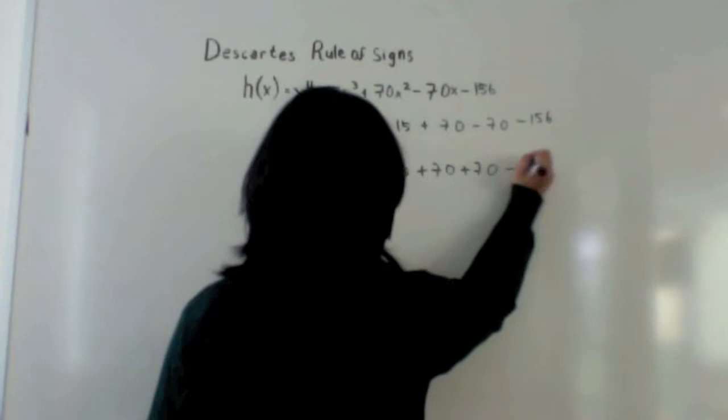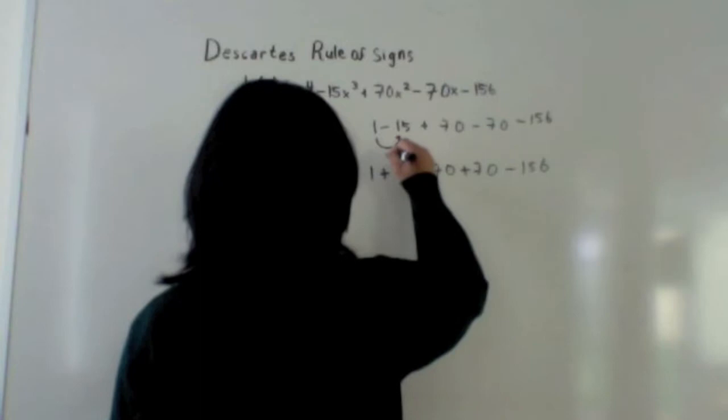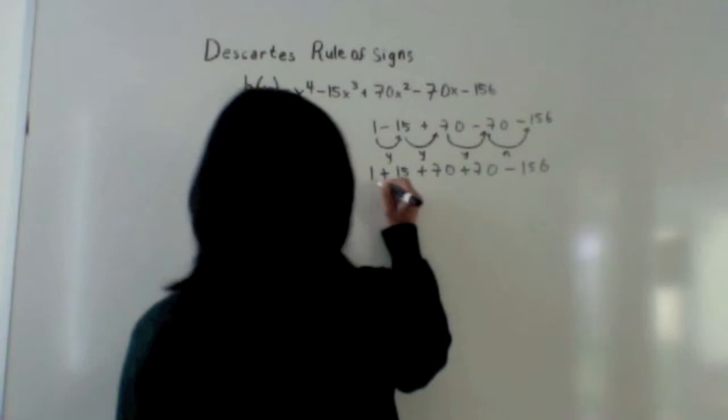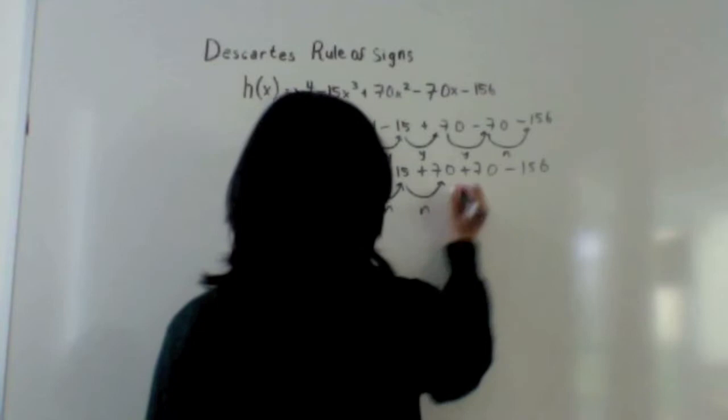For x=1, you go from positive to negative — yes. Negative to positive — yes. Positive to negative — yes. And negative to negative — no. For x=-1, you go: no, positive to positive — no, positive to positive — no, and positive to negative — yes.